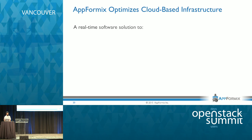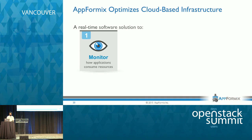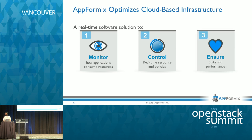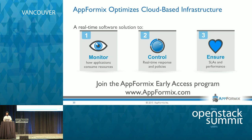So once again, we are Appformics and what we have is a real-time software solution that allows you to monitor all of your resources whether they're running on-prem or in the cloud. We give you one central dashboard on which you can visualize the resource consumption of all your resources by your VMs, containers, and hosts. We give you fine-grained control — in real time you can change the allocation of how much resource an application or VM is consuming, including storage IO — all in real time. In doing that, we can ensure better performance for your applications and better SLAs. You're welcome to join our Early Access Program at appformics.com. Thank you.